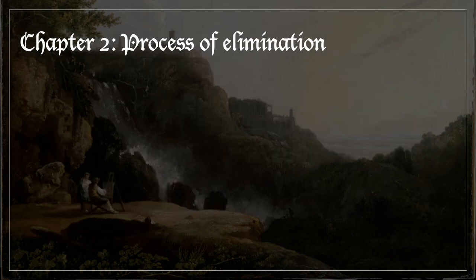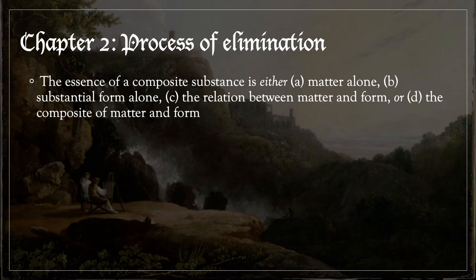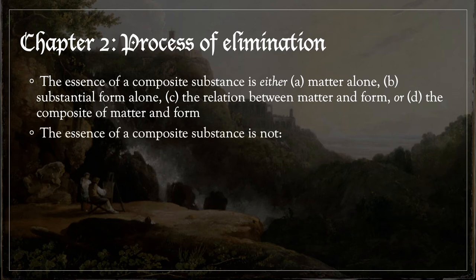The argument from process of elimination proceeds as follows. The essence of a composite substance is either A, matter alone; B, the substantial form alone; C, the relationship between matter and form; or D, the composite of matter and form. St. Thomas then says that the essence is not A, B, or C. Thus, the essence of a composite substance must be D by process of elimination — that is, the composite of matter and form.